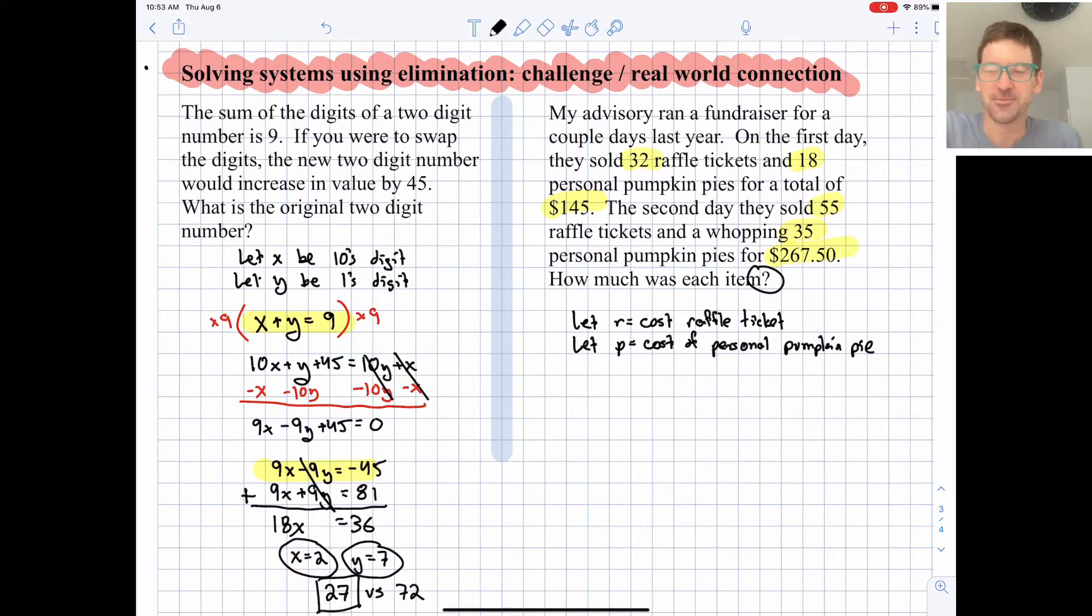Okay, super. So we can just rewrite these guys, rewrite the word problem, the scenario into mathematics. So on the first day, we have 32r plus 18p, we ended up with $145 in revenue.